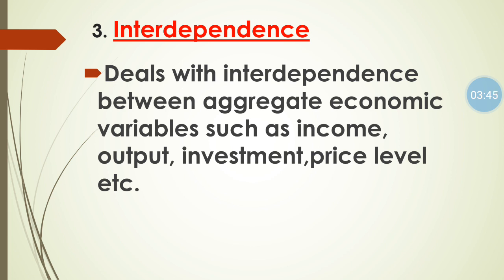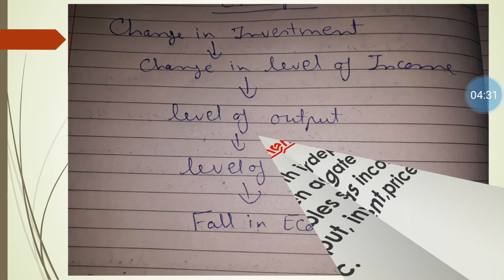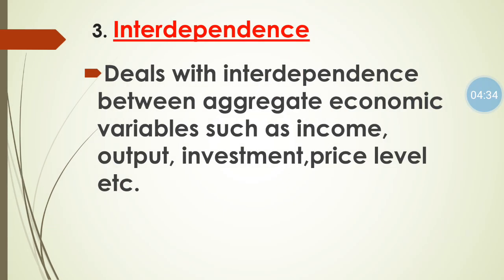Number three: Interdependence. Macroeconomics helps us to understand how aggregate and total economic variables are interdependent on each other — such as income, output, investment, and price level. If there is a change in any one variable, it affects others. For example, suppose there is a fall in investment: it will affect income, then there will be a change in output, then a change in employment, and ultimately economic growth will fall.